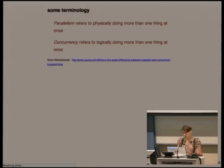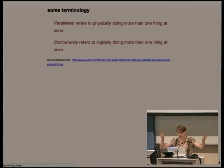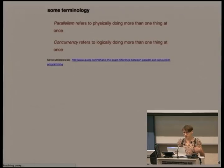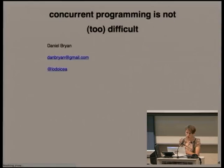A little bit of terminology — most people will probably understand this. Parallelism refers to doing more than one thing physically at once. If you have a multi-core processor, you have code essentially running at the same time on both of those cores. Concurrency just refers to doing that logically, so it can just be an abstraction. Concurrent code can be logically doing more than one thing at a time but running on a single core.